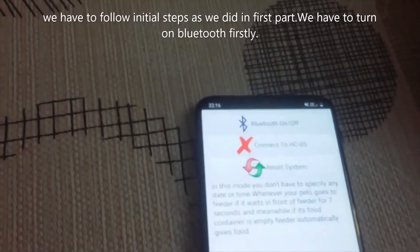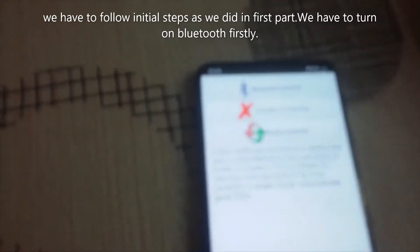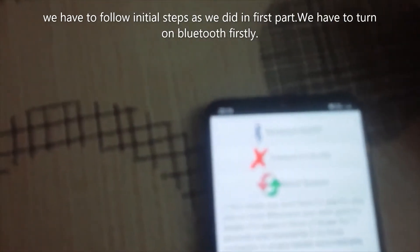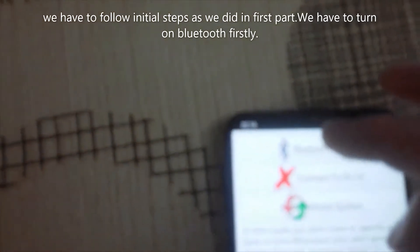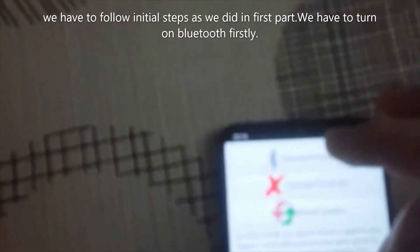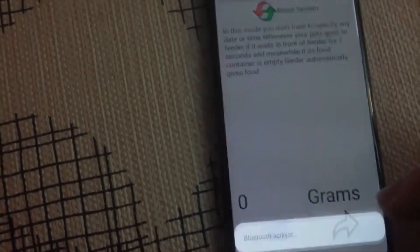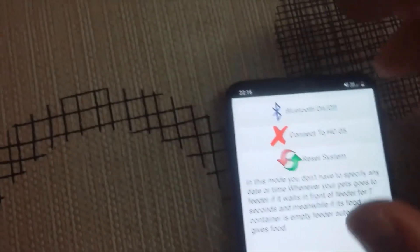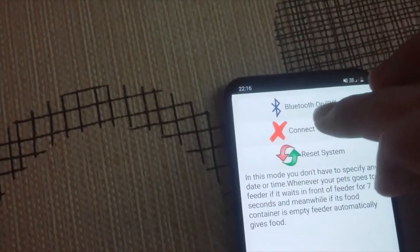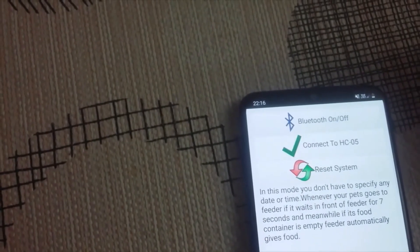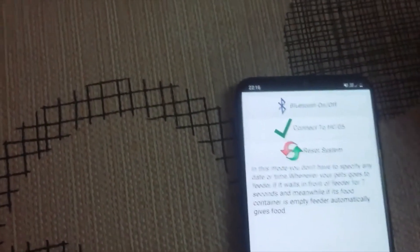We have to follow initial steps as we did in the first part. We have to turn on Bluetooth first. Now let's try to connect to the feeder. It is connected.